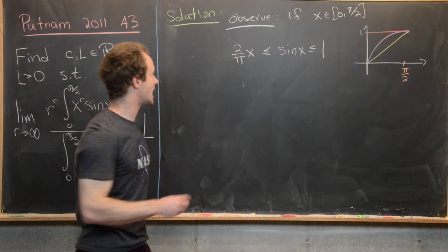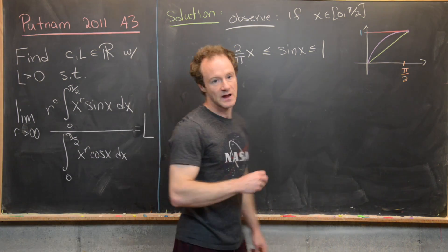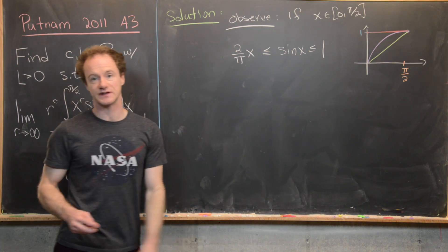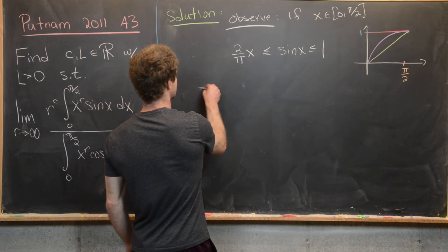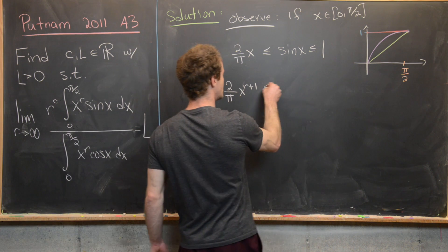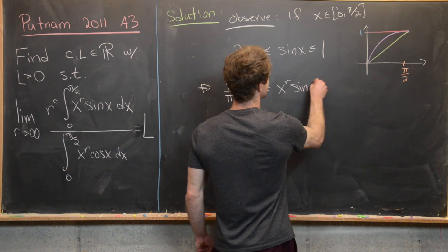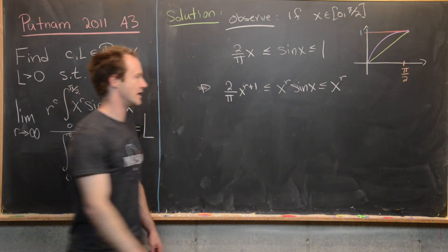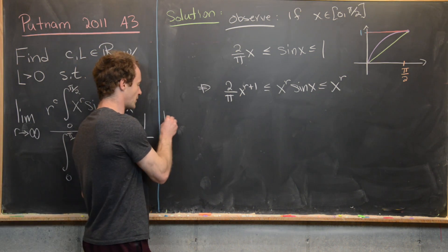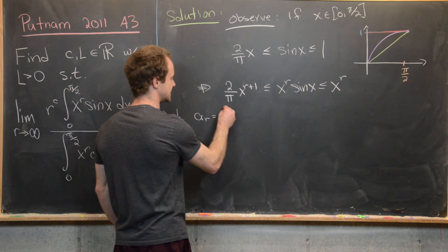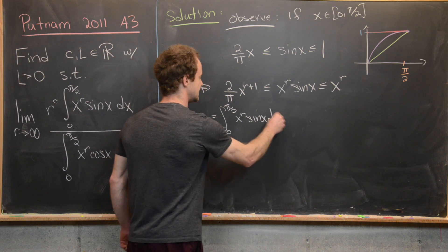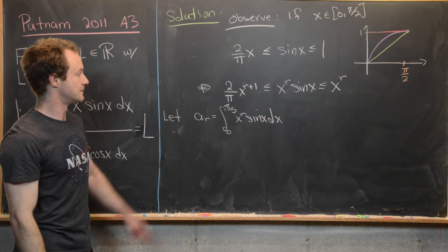We want to mold this inequality into something that looks like the numerator integral. We multiply through by x to the R — maintaining the inequality since x is going toward infinity and is positive — giving us (2/π)x^(R+1) ≤ x^R sin(x) ≤ x^R. Let's define A_R as the integral from 0 to π/2 of x^R sin(x) dx to avoid rewriting it repeatedly.